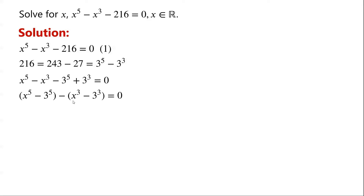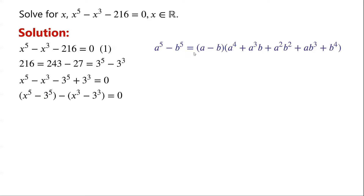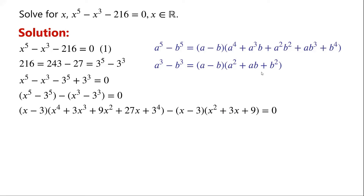Now we rearrange the equation and write x to the power of 5 minus 3 to the power of 5, minus x cubed minus 3 cubed, equals 0. We know that a to the power of 5 minus b to the power of 5 can be written as a minus b times a to the power of 4 plus a cubed b plus a squared b squared plus ab cubed plus b to the power of 4. We also know that a cubed minus b cubed can be written as a minus b times a squared plus ab plus b squared.